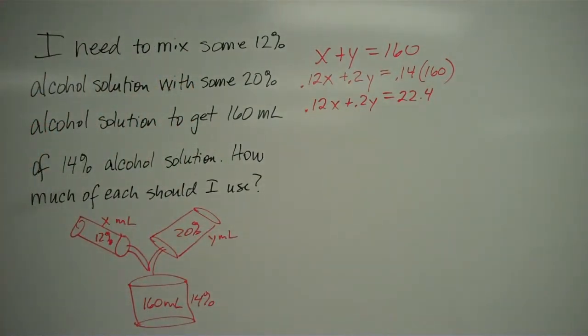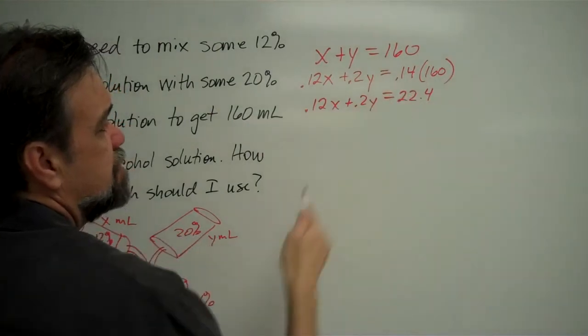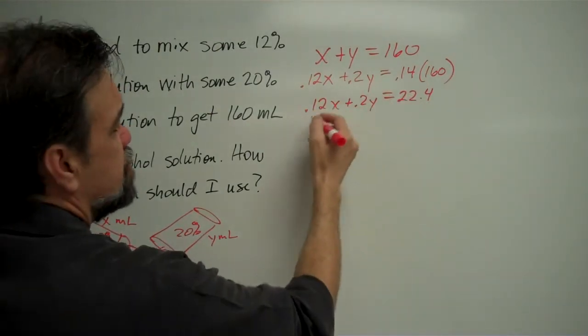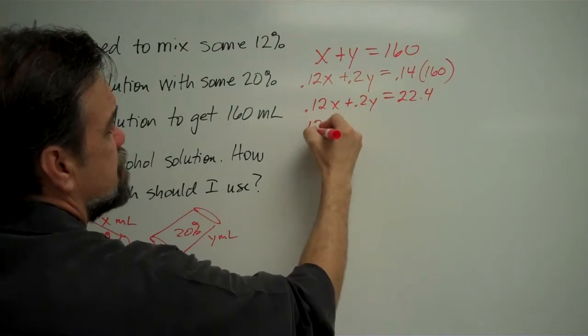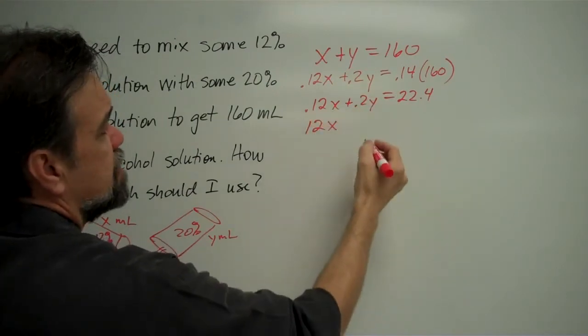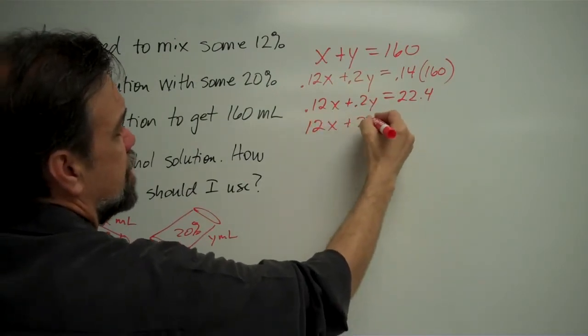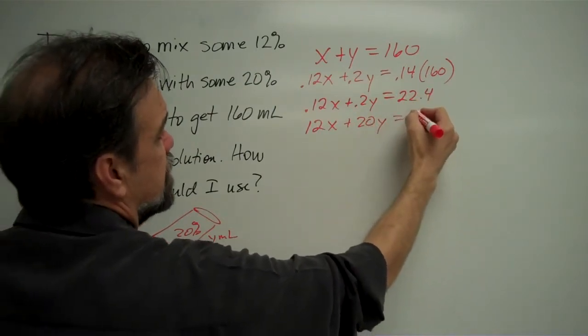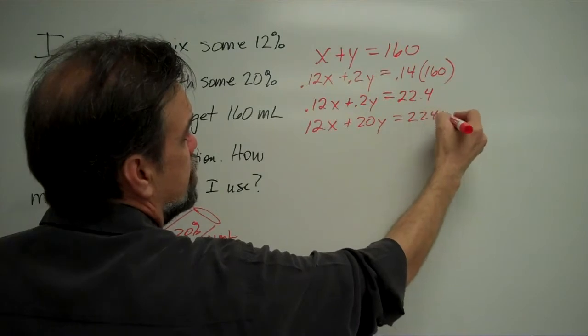And what I do sometimes, just to make life a little simpler, is I will multiply both sides of this equation by 100. And let me tell you why I do that. 0.12 times 100 is going to give me 12 times x. 0.2 times 100 is going to give me 20 times y. And 22.4 times 100 is going to give me 2,240.